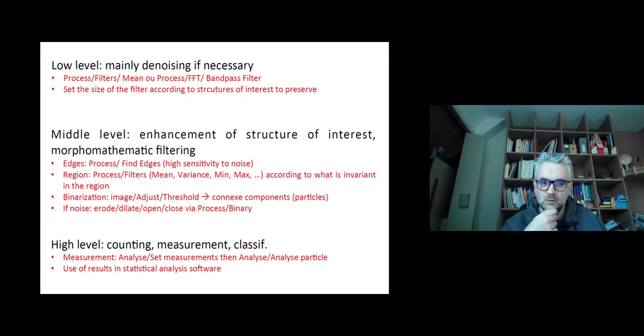We've then seen middle-level image processing where we'd like to enhance the structure of interest and apply morphomathematics filtering. Enhancing edges through Process > Find Edges has high sensitivity to noise, so it's important to denoise first. For enhancing regions, we have Process > Filters with Minimum, Maximum according to what's in the environment in the region of interest you want to highlight.